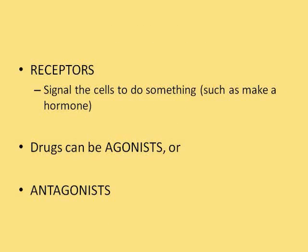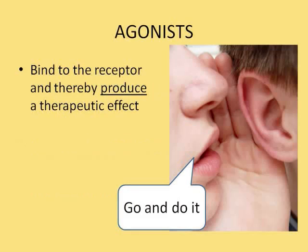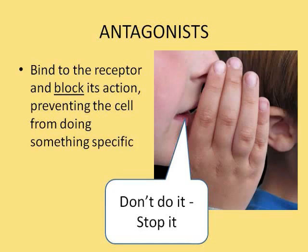Receptors are structures on the cells that tell the cells to do something. They can be agonists, where they bind to the receptor and produce a therapeutic effect — for instance, it binds to a receptor and says we've lost a lot of blood, you better make the blood pressure go up. Or the drugs can be antagonists, where they bind to the receptor and block its action, preventing the cell from doing anything — for example, your blood pressure is too high, stop doing what you were doing.